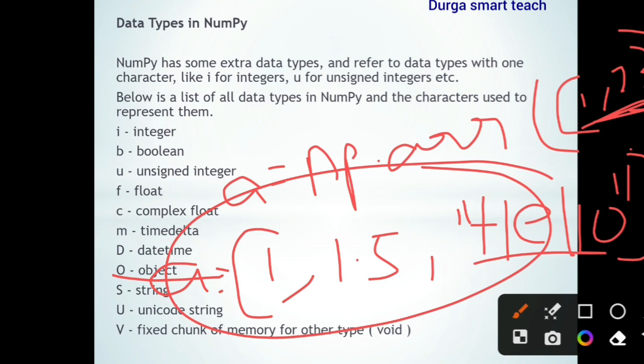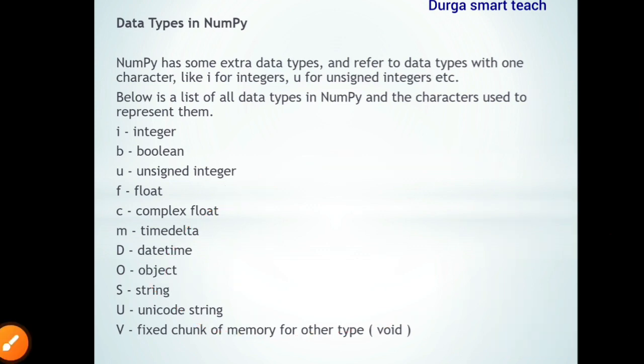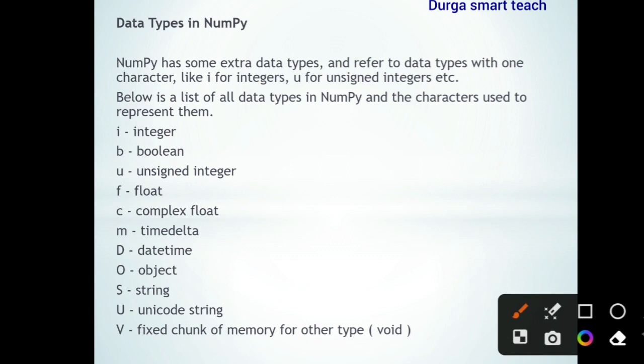If you store all integer values, the data type will be considered integer. If you store all float values, it will be considered float. Unicode string refers to a single character string. Void means empty — if you store nothing in an array, that is known as void.